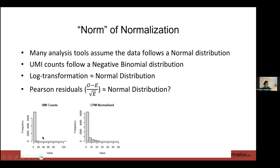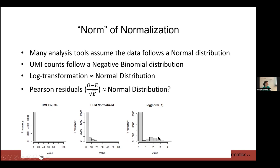Here are some UMI counts for a gene. The raw values are super skewed. If you counts-per-million normalize them, it's still super skewed, but it looks like an exponential distribution. If we log transform that, we get something close to a normal distribution, with a spike at zero. So we log transform our normalized counts to get a fairly normal distribution for our data, and then we can use things like PCA and linear regression.